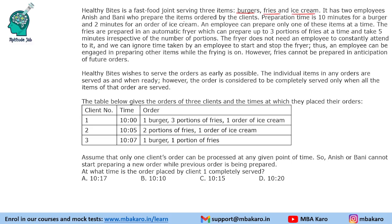It has 2 employees who prepare the items ordered by clients. Preparation time is 10 minutes for a burger and 2 minutes for an order of ice cream. An employee can prepare only one item at a time. The fries are prepared in an automatic fryer which can prepare up to 3 portions at a time. People order 3, 2, or 1 portion of fries, so the fryer only needs to be used once per person. It takes 5 minutes irrespective of the number of portions, so fries always take 5 minutes.